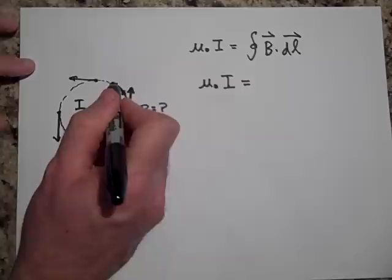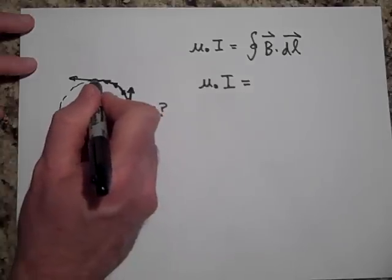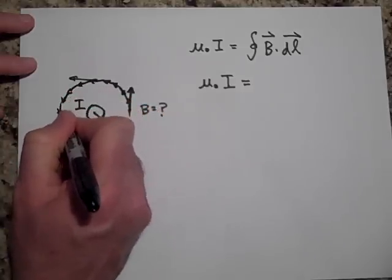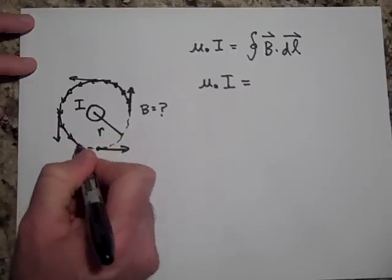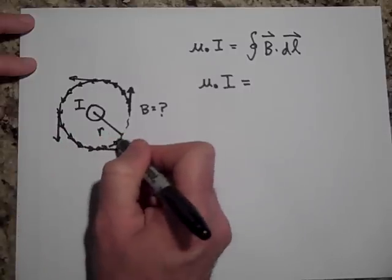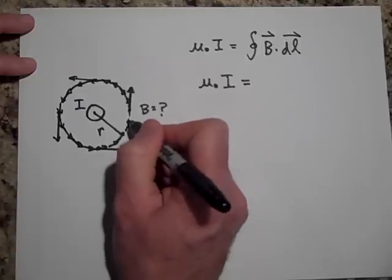See how they're parallel at every point along the way? dl is this little vector - and I don't mean they have a curve, it's actually a straight vector - but because it's so little, they make up that loop.